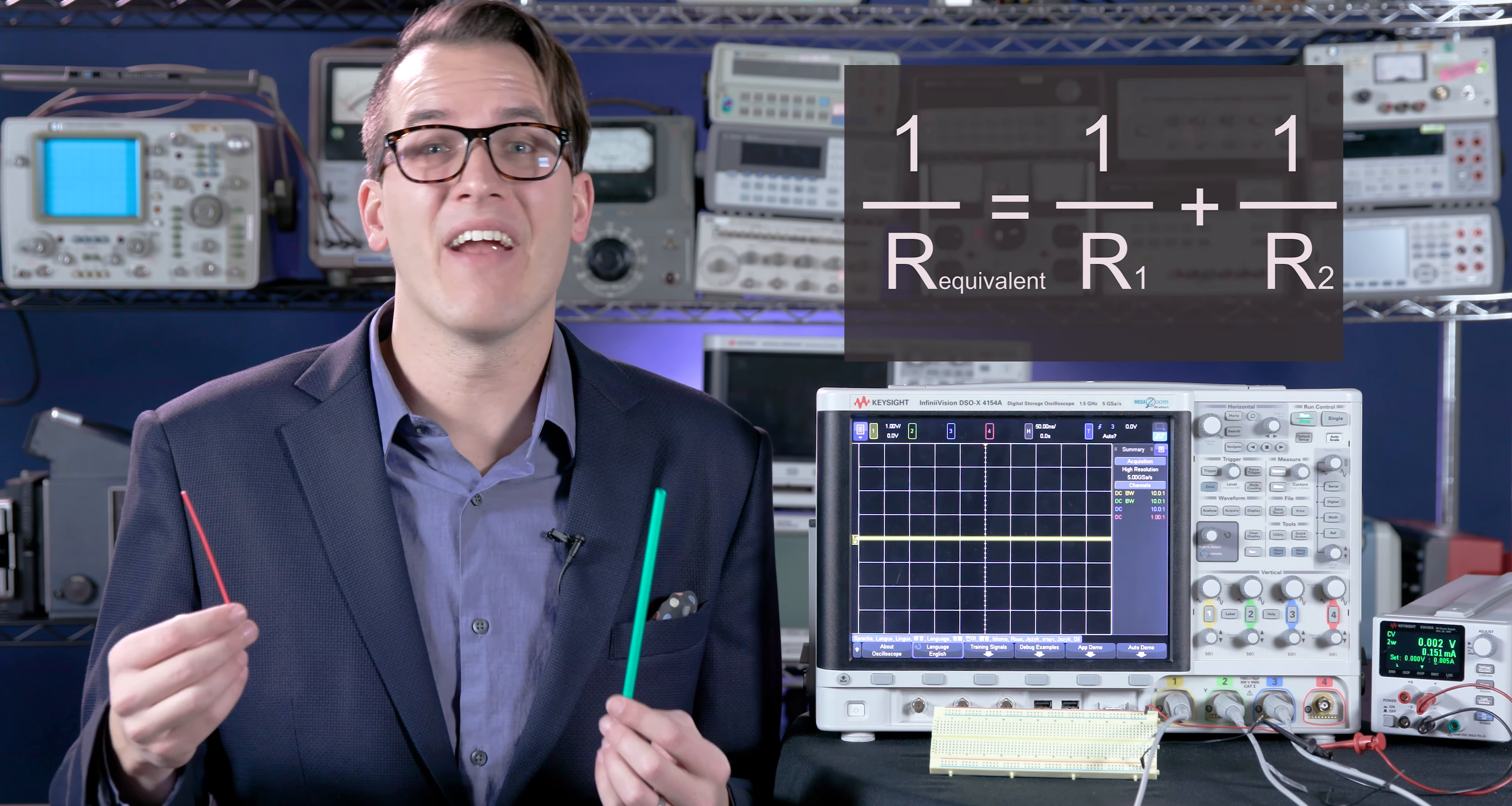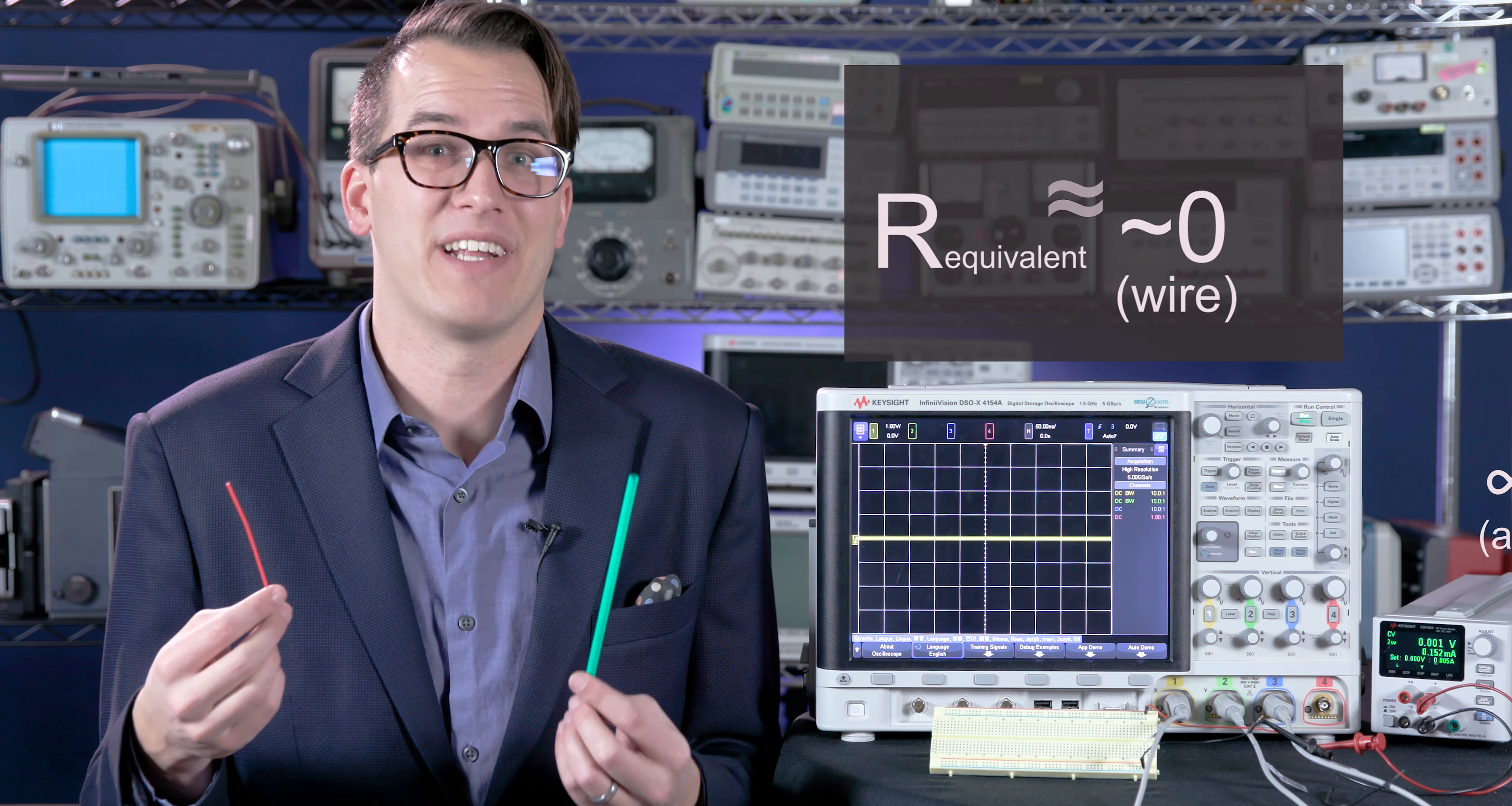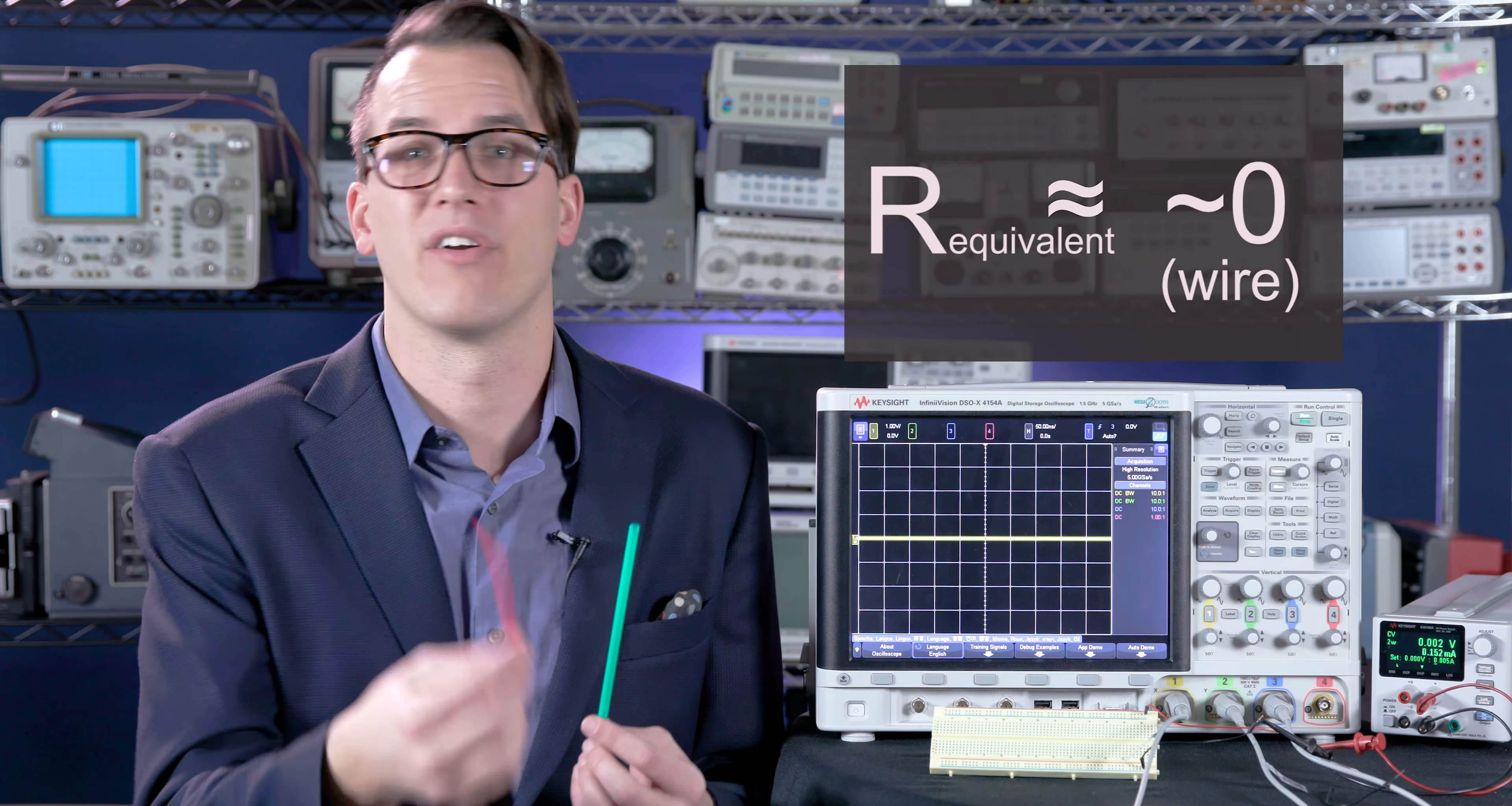So for your circuit, air has an effectively infinite resistance, no current is going to flow through it, and wires are going to have an effectively zero resistance, so all of the current is going to flow through your wires.